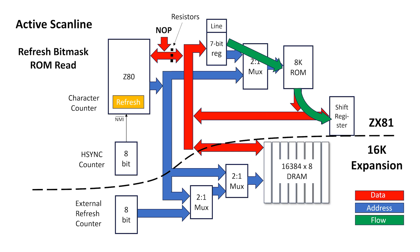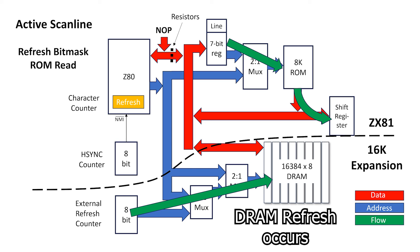But, here's really the crux of this video. At the same time, during the refresh cycle, the multiplexers are configured to send a row address from the external refresh counter, and a DRAM refresh cycle occurs. This is how the DRAM keeps its content safe on the ZX81.